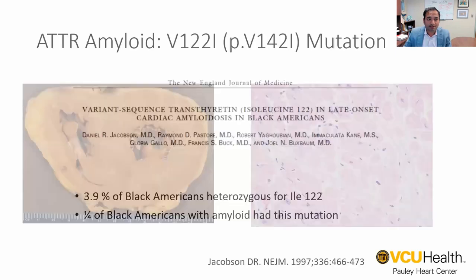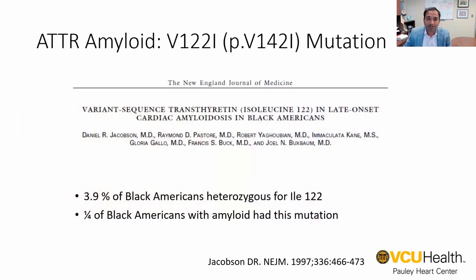Coming back to hereditary amyloid, in the United States, the most prevalent mutation is the V142I mutation that predominantly affects Black Americans. This mutation came over from West Africa during the slave trade, and now one in about 20 Black Americans are gene carriers. This doesn't necessarily mean they'll develop disease, but they're certainly at increased risk. That being said, this previously rare disease is a lot more common than initially thought.